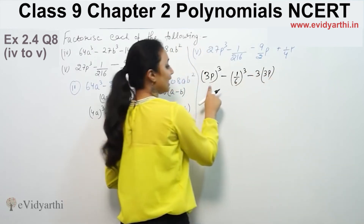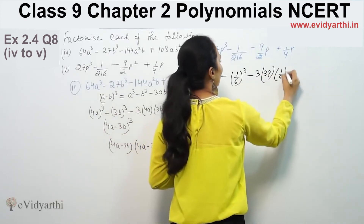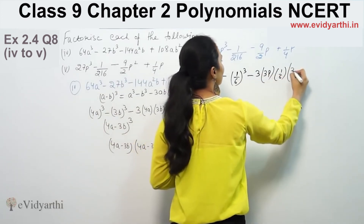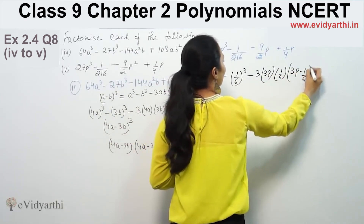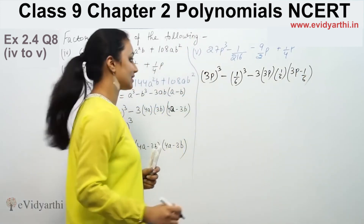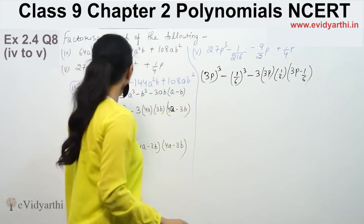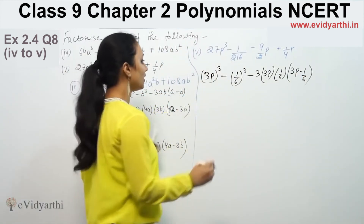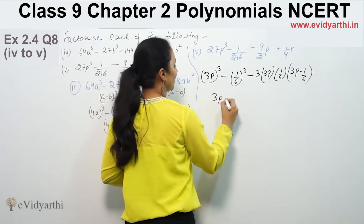Here a is 3b and b is 1/6. So applying the (a - b)³ formula, we get minus 1/6. Revisiting: (a - b) whole cube, so we have (a - b) factored out. The answer for this part follows the same pattern as before.